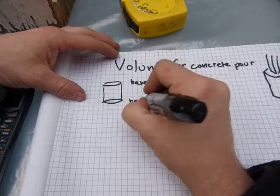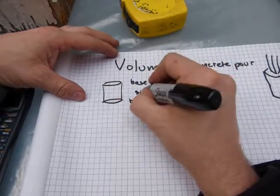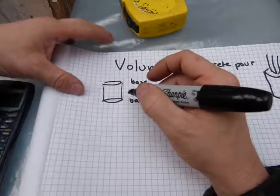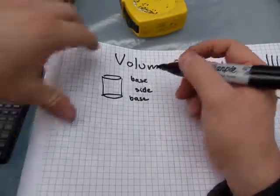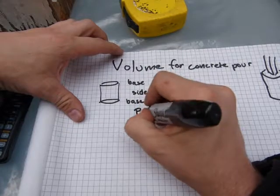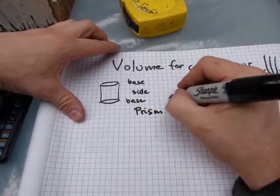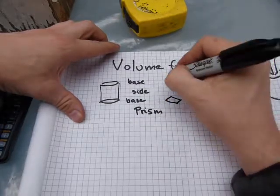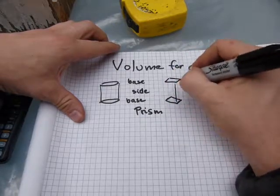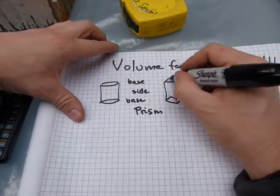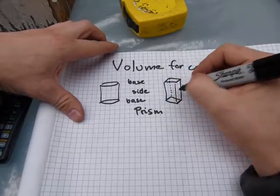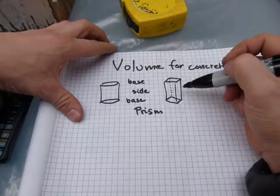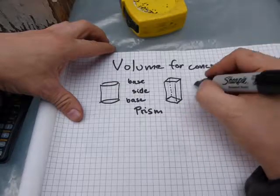A prism has a base and then some kind of side, and the shape of the side is a rectangle. The shape of the base in this case is a circle for the cylinder. The other prism is the deck post — it's got a base, another base, and four rectangular sides. So this one is a rectangular prism.